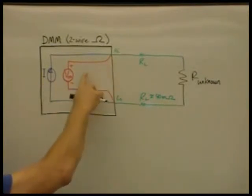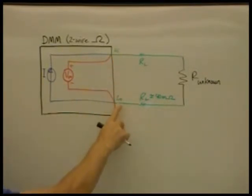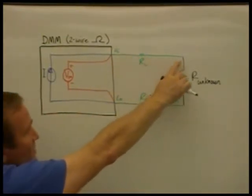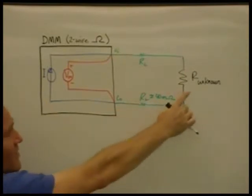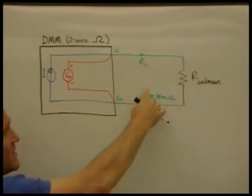And then we use the internal voltmeter to measure the voltage across the high and the low terminals. And therefore, we can calculate the total resistance in this path, the unknown resistor, as well as any lead resistance.